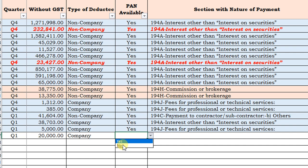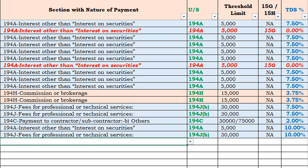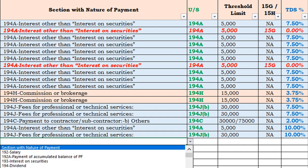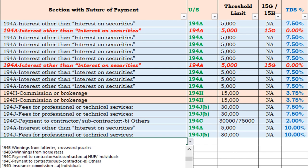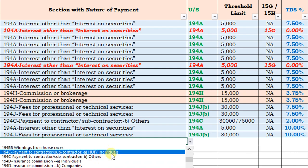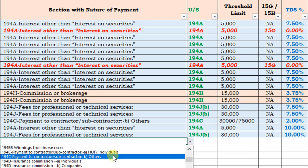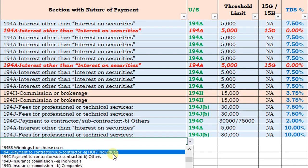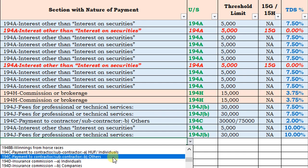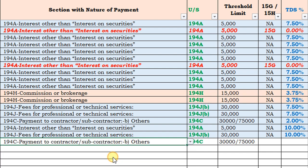Here I am selecting PAN available: yes. The next column is the nature of payments — click on the dropdown list and all available sections with their nature will be shown. Select the relevant section. Here I am selecting 194C — payment to contractor or subcontractor. Under 194C I have given two options: one for individuals/HUF and another for others (non-individuals). Since we selected company deductee, I am selecting 194C payment to contractors or subcontractors, others. The section 194C is automatically loaded.